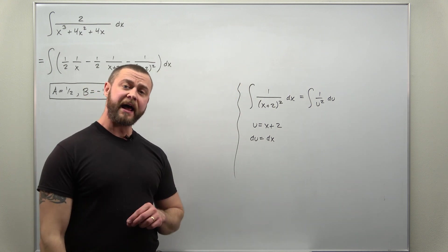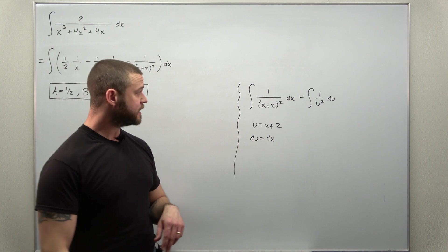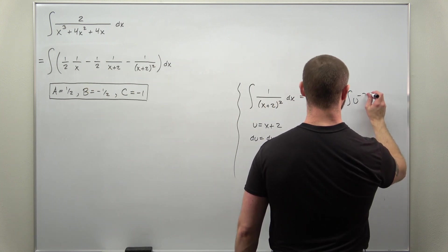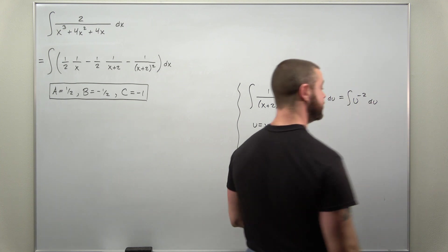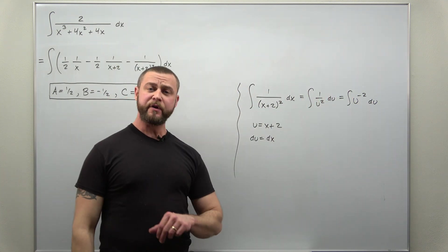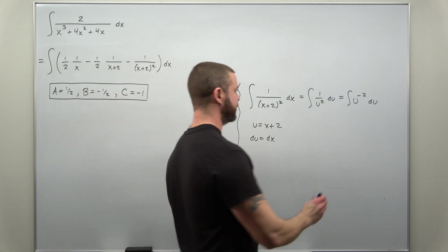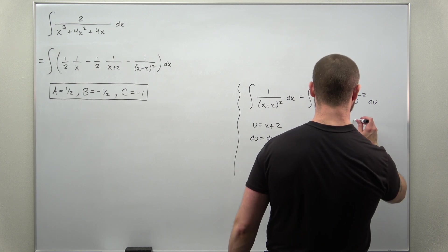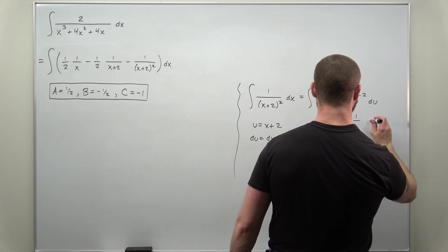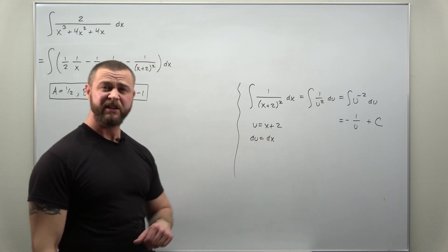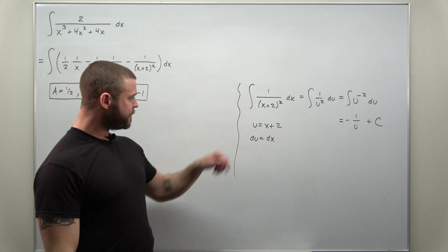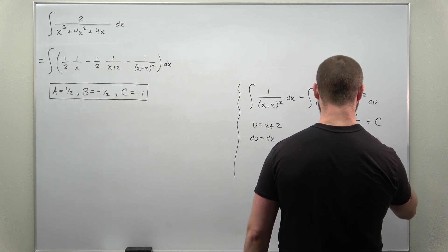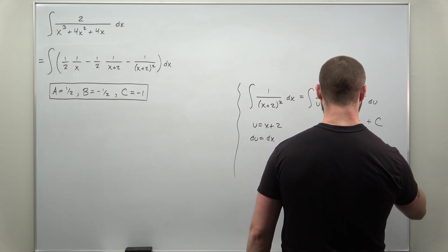And we can even write that as a power if we use negative exponents. So we'll rewrite this as the integral of u to the negative second power. And if we use the power rule, add 1 to that exponent. And then divide by the new power, we get negative. And I'll write that as 1 over u. u to the negative 1, same thing as 1 over u. And back substitute your u. We get this comes out to negative 1 over x plus 2.